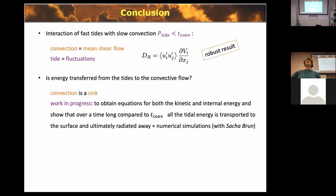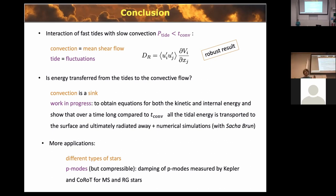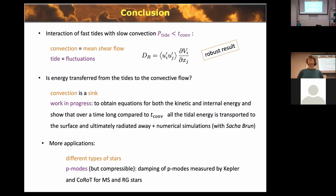There are more applications: different types of stars, and notably acoustic modes — p-modes — excited in the Sun and other stars, for which we have very good measurements of the damping rates. The damping of those modes is also due to interaction with convection. If we can extend this framework to the compressible case, we can model the damping of p-modes by convection as well. Thank you for your time.